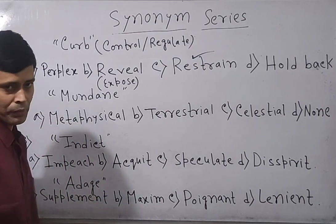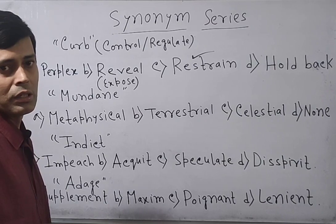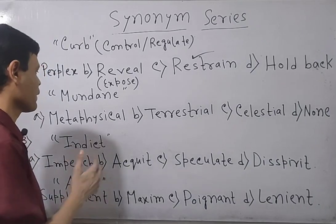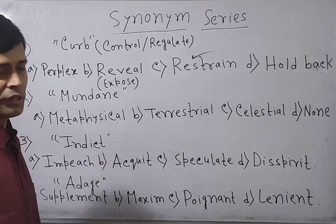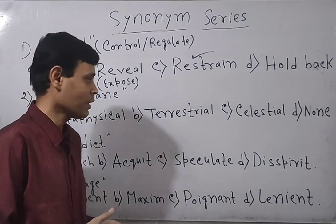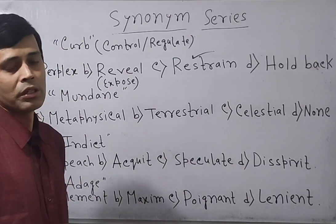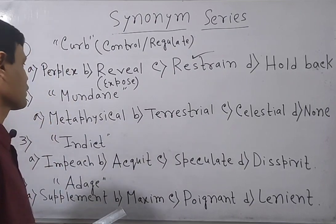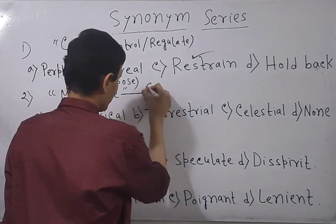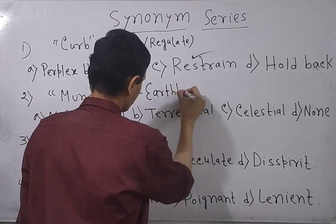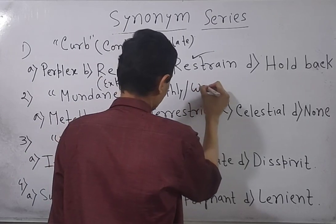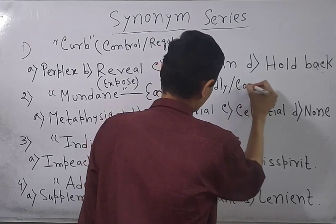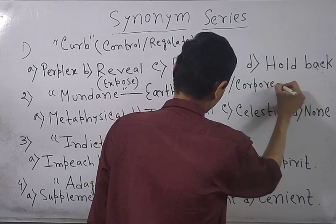The next word is 'mundane'. Mundane means something related to the earth, or earthly, worldly, something like that. Options are there: metaphysical, terrestrial, celestial. Metaphysical means supernatural. Terrestrial means related to the earth or earthly. Celestial means divine or heavenly. Mundane means earthly, worldly, or corporeal.